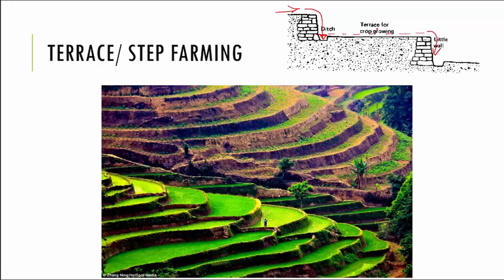Another very interesting thing about step farming is that though some soil may be carried from one step, whatever soil is carried gets deposited in the next step, and whatever is carried from that step deposits in the one after. So ultimately we are not losing any soil at all — whatever is carried from the first step deposits on the second, and from the second onto the third. So it's not leaving barren land. This is the use of step or terrace farming.